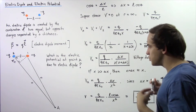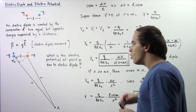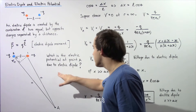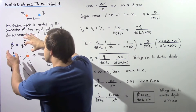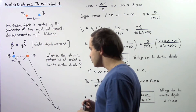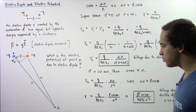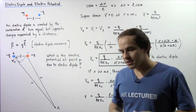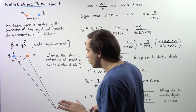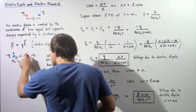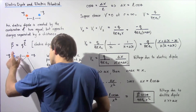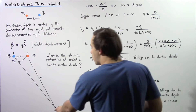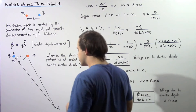We want to find the electric potential, the voltage, at point A as a result of the electric dipole. Since voltage is a scalar, we simply find the voltage at point A due to each charge separately, then take the algebraic sum to calculate the total voltage at point A due to the dipole.